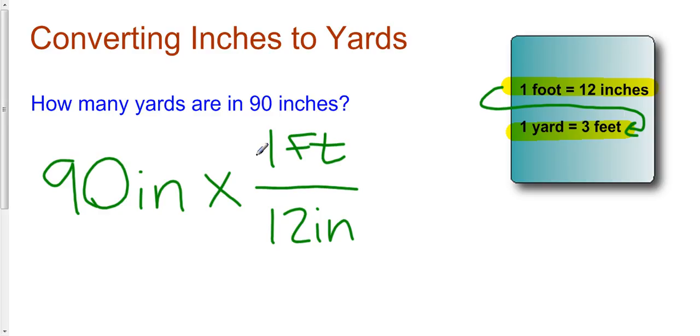If I take this result and then multiply it by what I want, which is yards, one yard, and divide by what I don't want, which is feet, three feet, my end result is going to be yards.